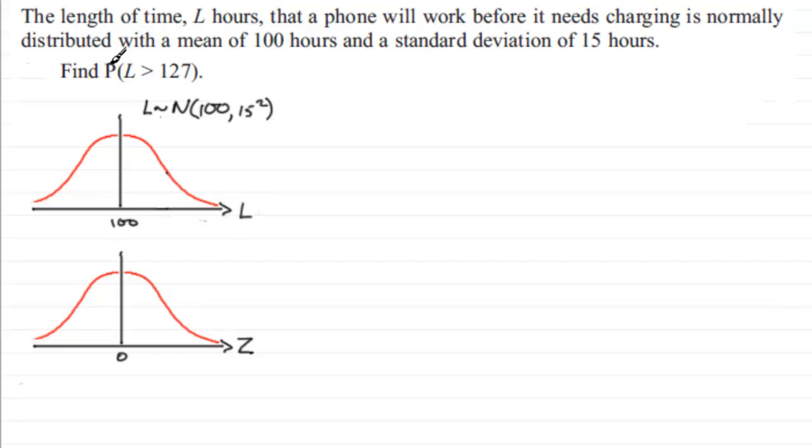So we're looking for the probability that L is greater than 127. So if I just mark that in, say here, that L, that's our observed value, is equal to 127, then I'm looking for the probability of being greater than 127, and that's represented by that area there.